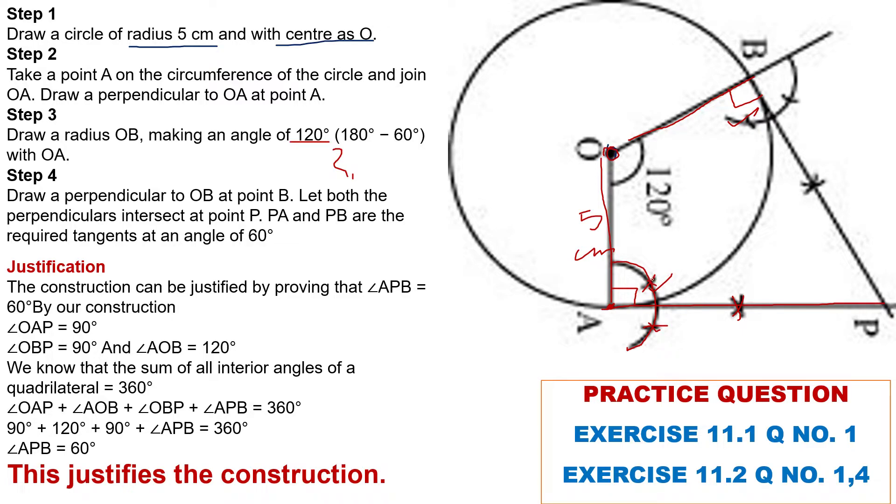Or inclination, if we make an angle of 60 degrees, using angle sum property of a quadrilateral, finally at the center we make an angle 120 degrees. Then this OB will be another radius, and at point B we draw perpendicular BP.